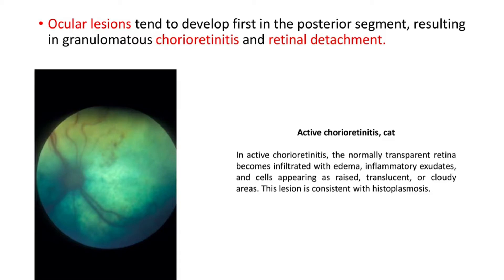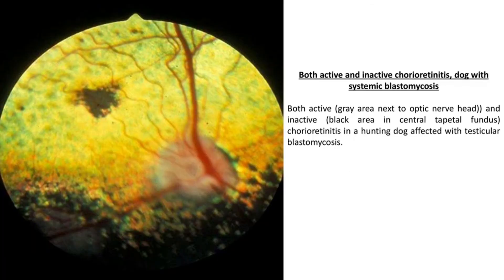Ocular lesions tend to develop first in the posterior segment, resulting in granulomatous chorio-retinitis and retinal detachment. This is active chorio-retinitis in a cat - the normally transparent retina becomes infiltrated with edema, inflammatory exudates and cells, appearing as raised translucent or cloudy areas. This lesion is also seen with histoplasmosis. In a dog with systemic blastomycosis, a gray area next to the optic nerve head is the active area, and the inactive area is the black area in the central tapetal fundus.